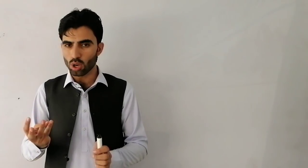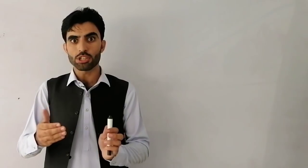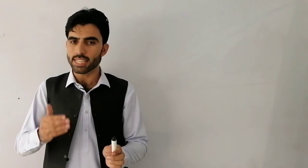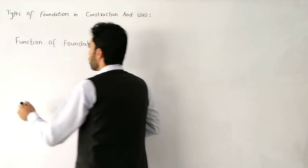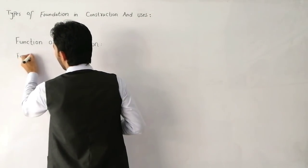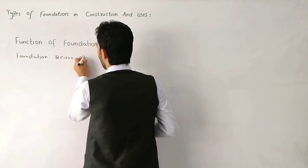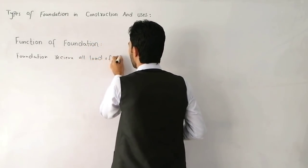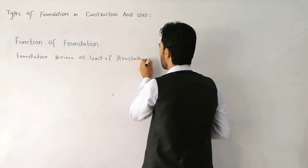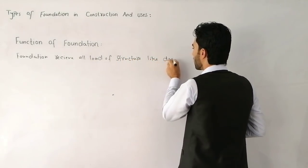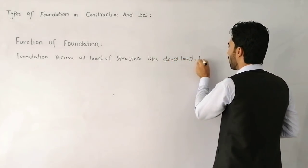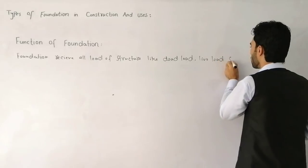Foundation receives all loads of the structure — like dead load, live load, seismic load, etc. — which are distributed on columns. Columns then transfer the load to the ground. But remember that the structure load should not be greater than the safe bearing capacity of the soil.